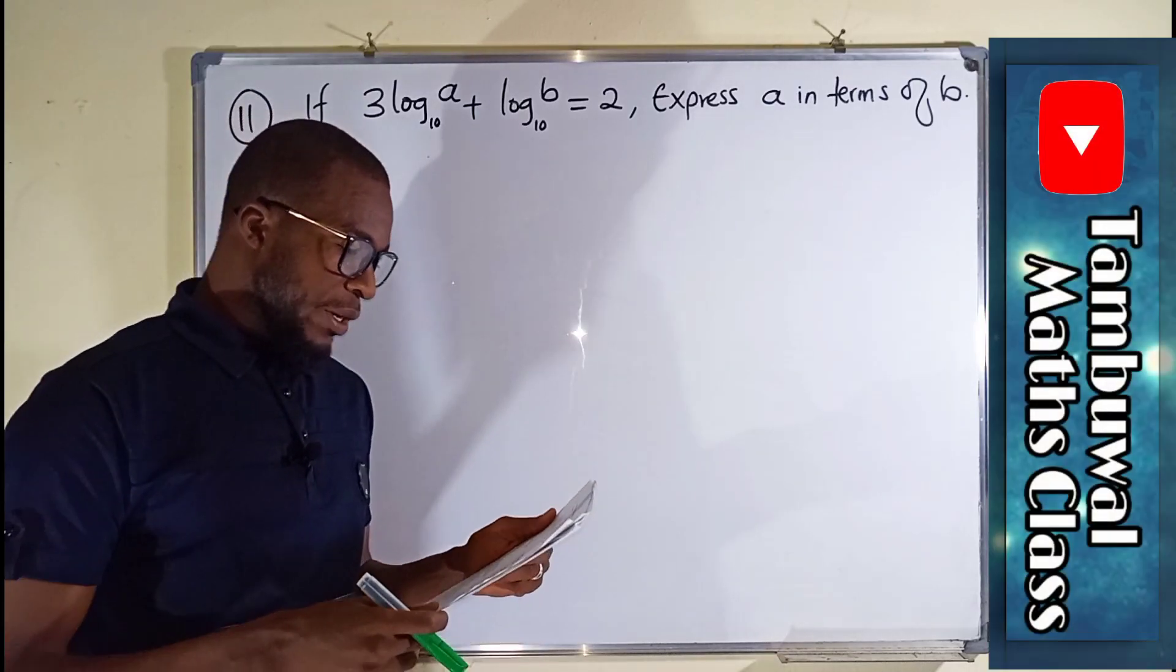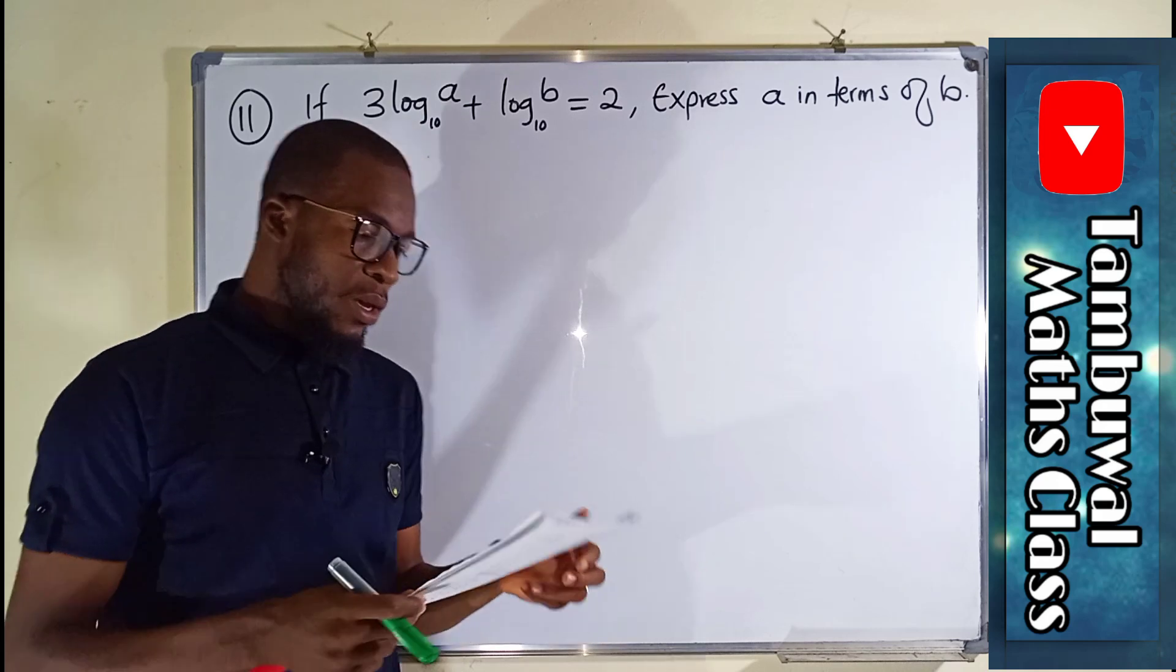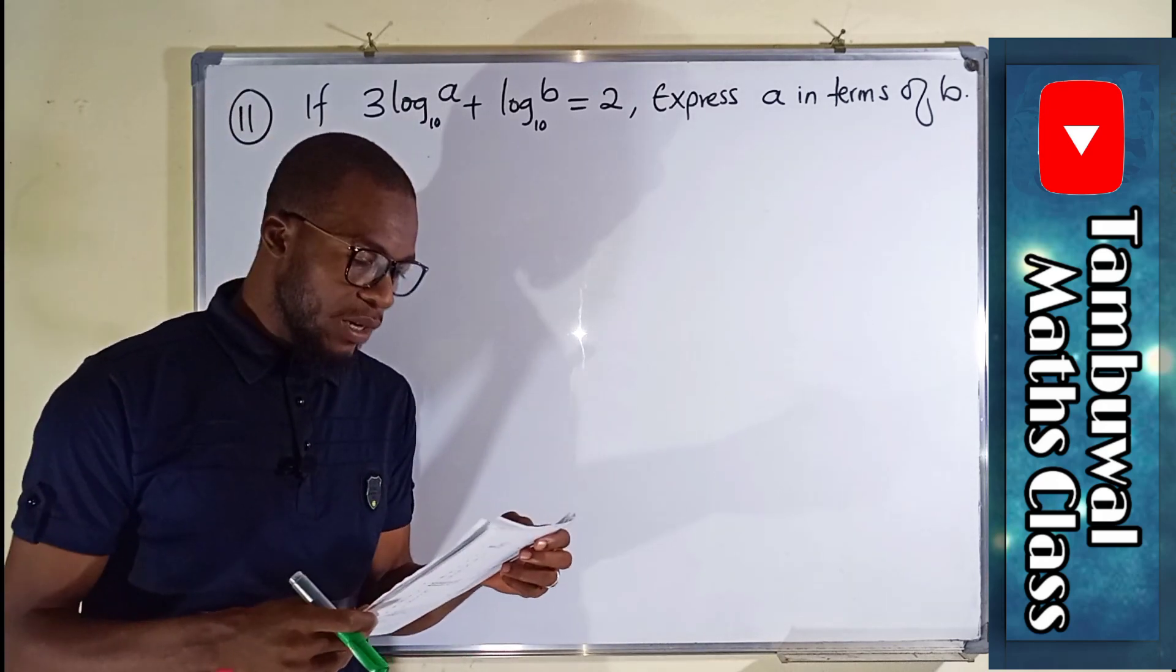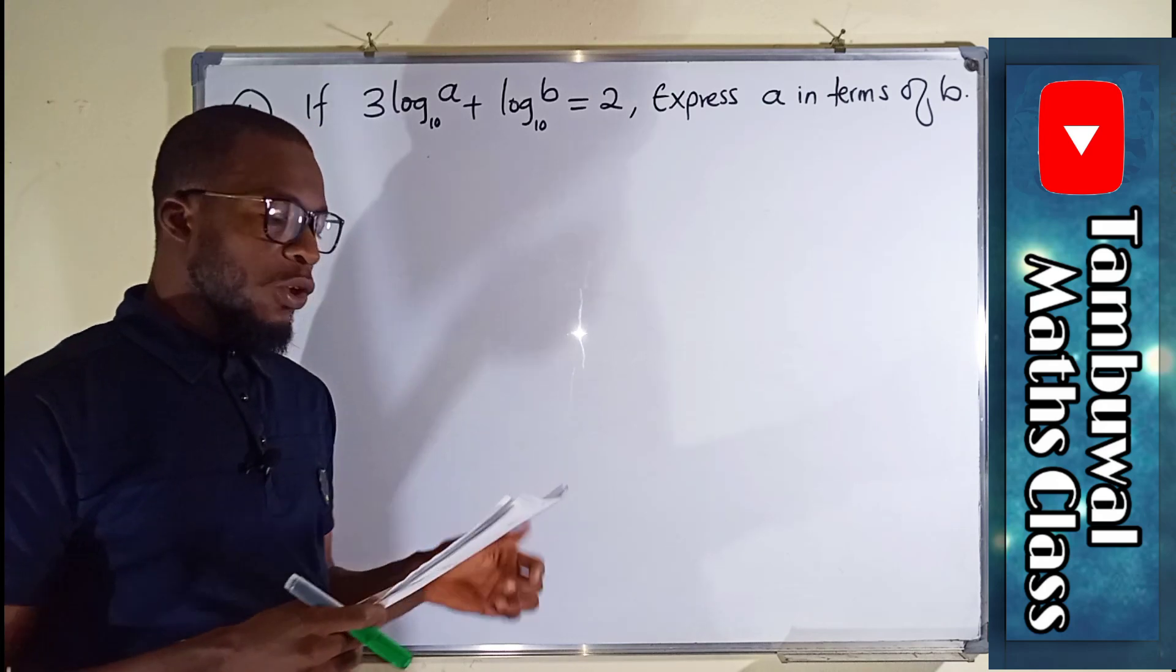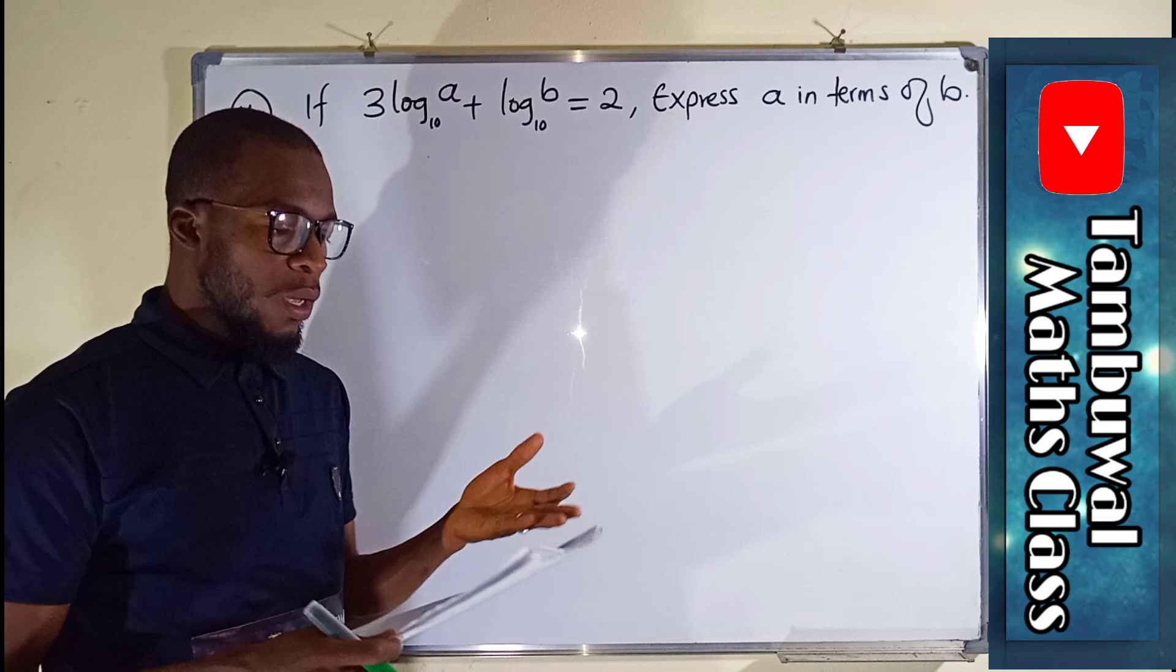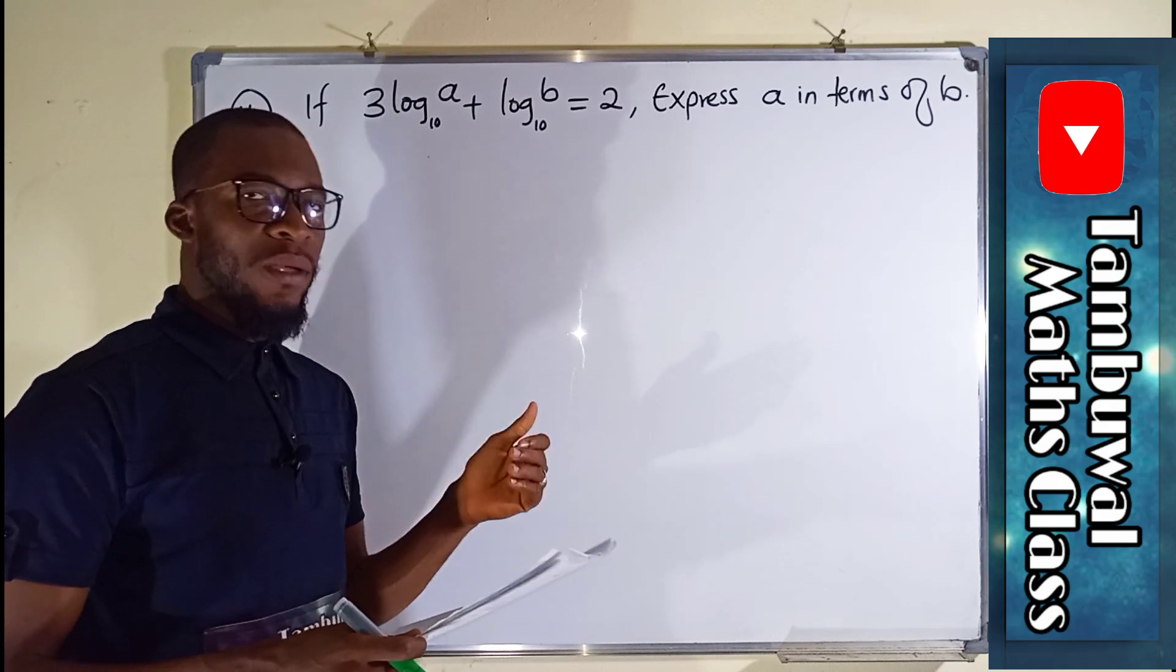So here is question number 11, which is a question under logarithm. It says if 3 log A to the base 10 plus log B also in base 10 equals 2, we are asked to express A in terms of B.